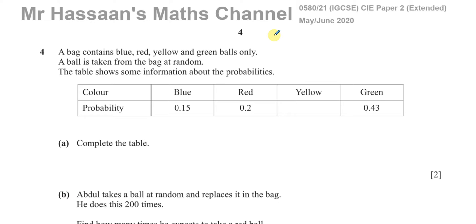This is a question on probability. The bag contains blue, red, yellow, and green balls only. A ball is taken from the bag at random. The table shows some information about the probabilities.